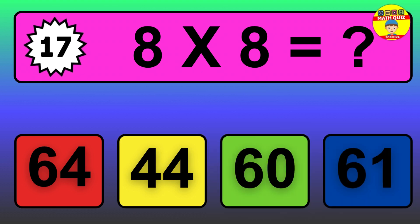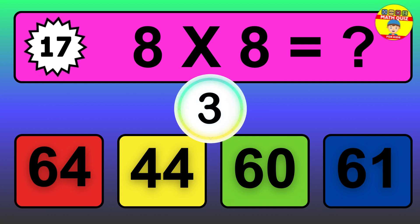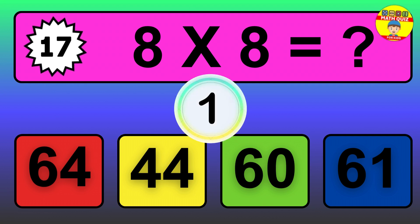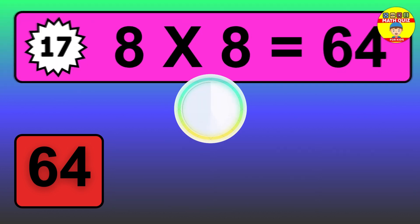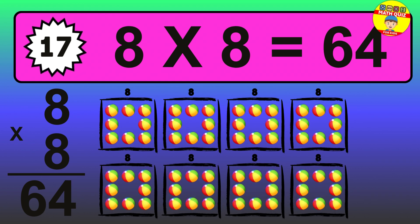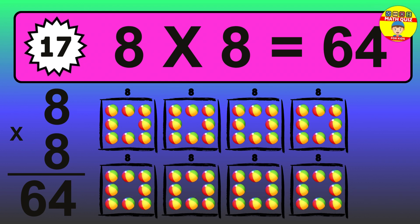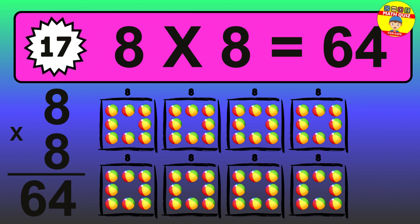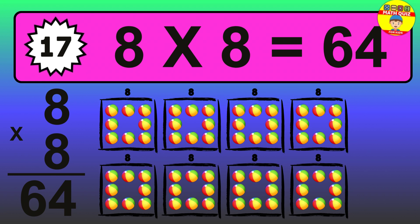Question 17. 8 times 8 equals what? The answer is 8 times 8 is 64. To calculate, we have 8 groups with 8 balls each one. So, how many balls do we have? 64 balls.